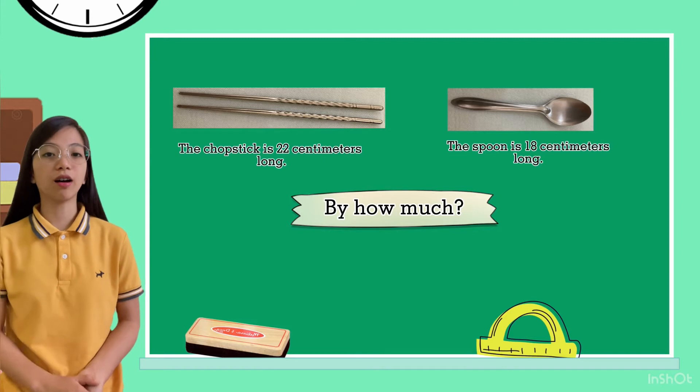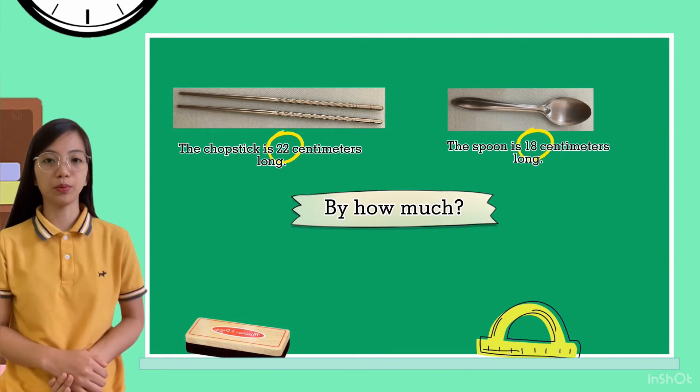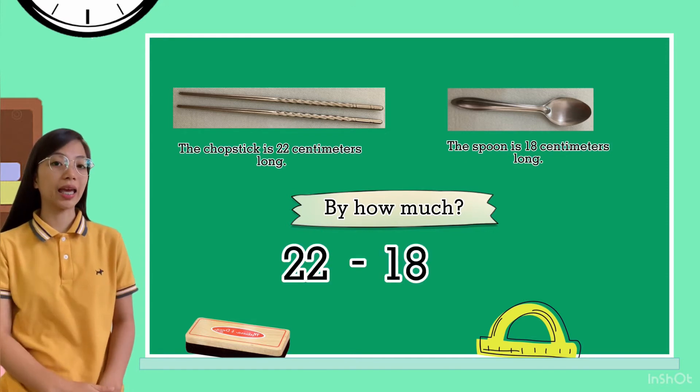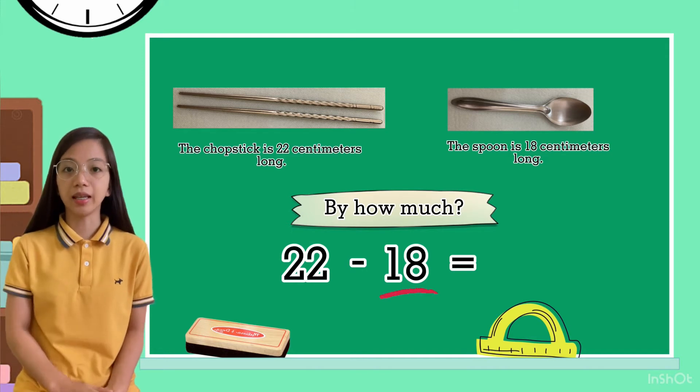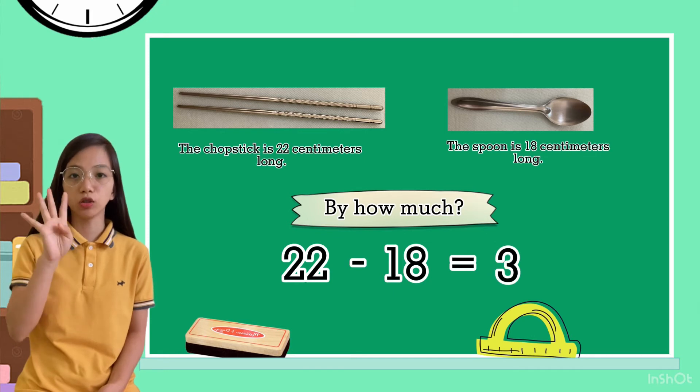Get the length of the chopsticks and then the length of the spoon. So, 22 minus 18 equals 18, 19, 20, 21, 22.